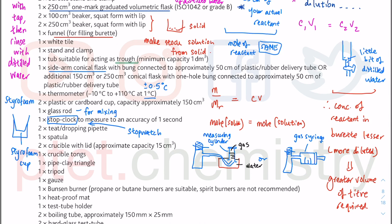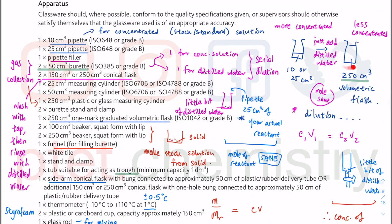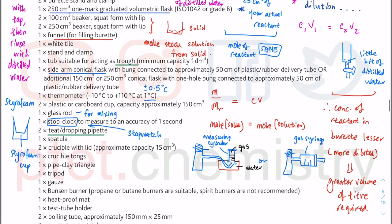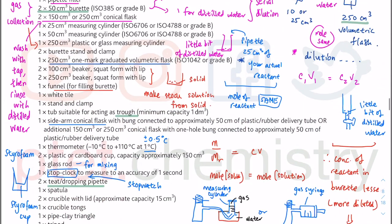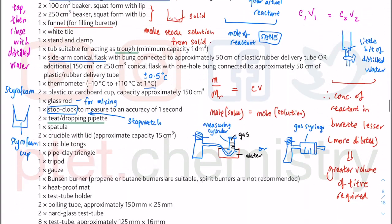Two dropping pipettes are important for making up solutions — when close to the 250 cm³ mark on the volumetric flask, you add distilled water drop by drop so you do not exceed the mark. The same applies when making up stock solutions from solid: add water drop by drop when close to the 250 cm³ mark to ensure accuracy.